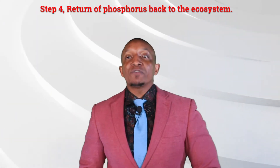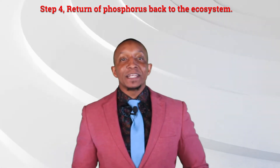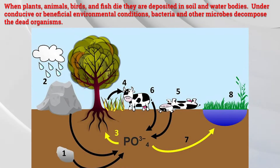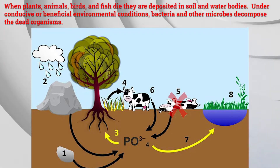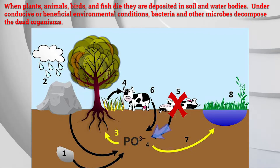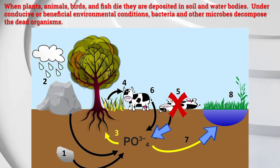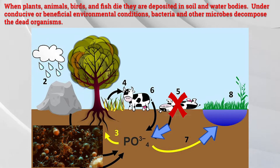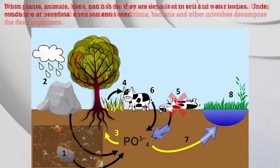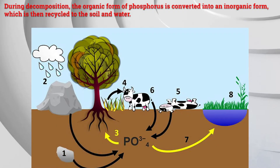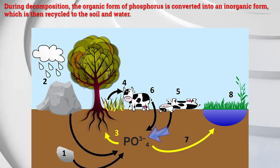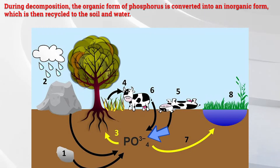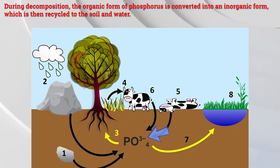Step 4: Return of phosphorus back to the ecosystem. When plants, animals, birds, and fish die, they are deposited in soil and water bodies. Under conducive or beneficial environmental conditions, bacteria and other microbes decompose the dead organisms. During decomposition, the organic form of phosphorus is converted into an inorganic form, which is then recycled to the soil and water.